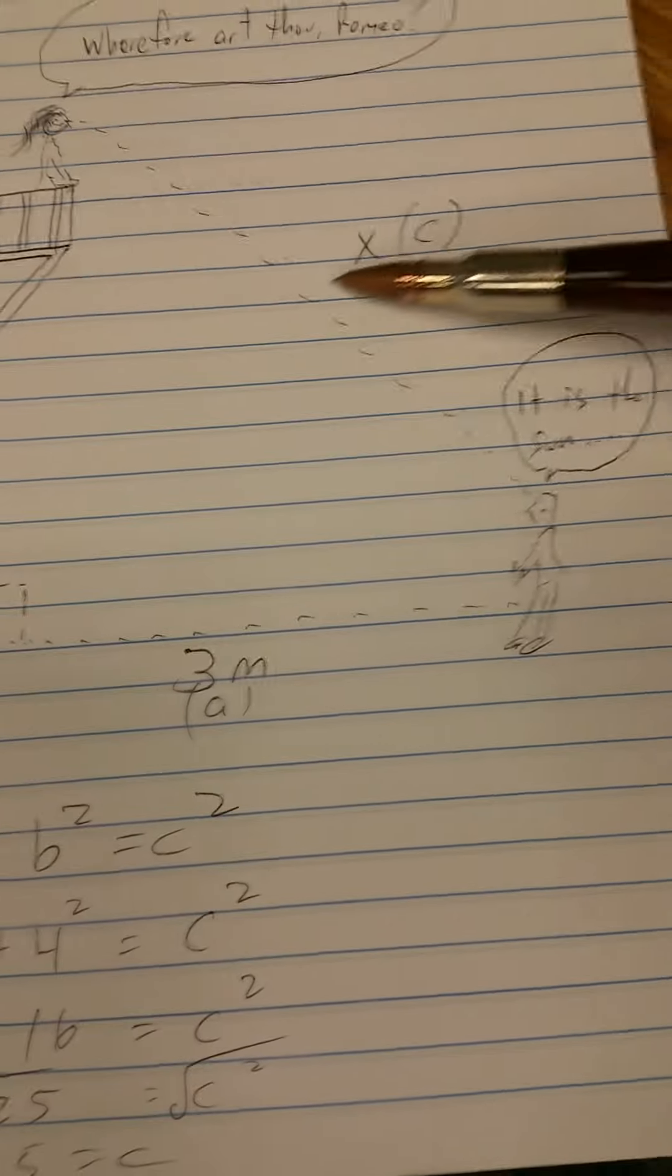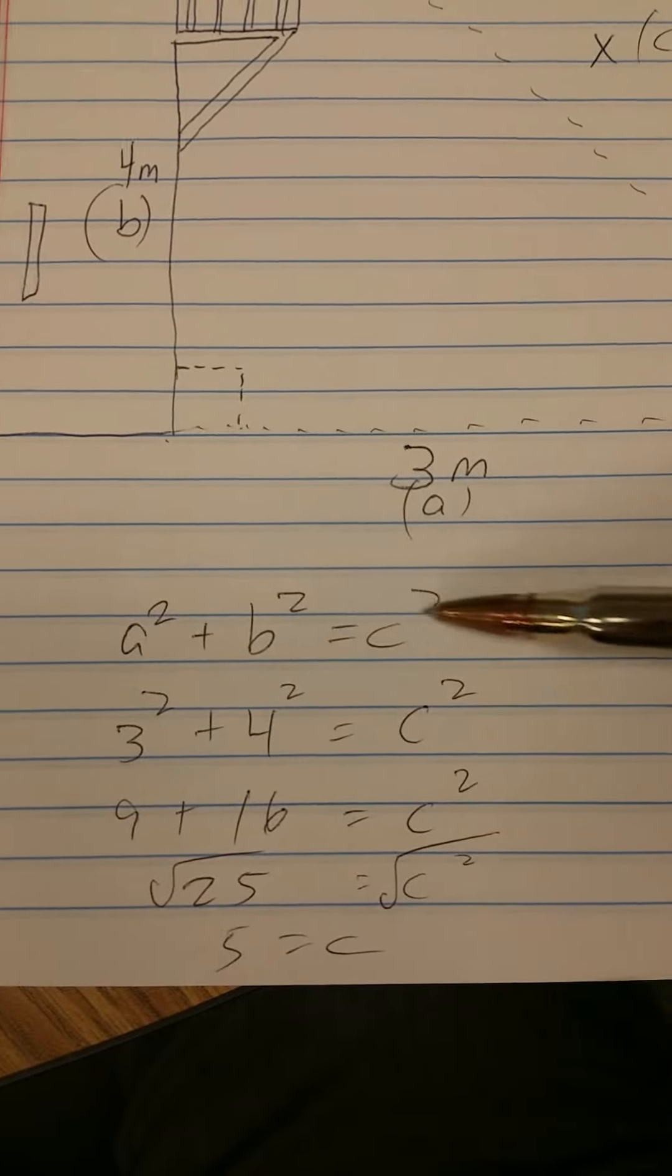A, B, and C. A squared plus B squared equals C squared.